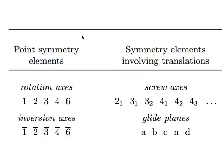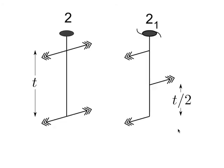The translational symmetry elements we are interested in are screw axes and glide planes. The screw axes are straightforward. This is a dyad — a rotation of 180 degrees reproduces the structure, and this is the repeat distance t along the dyad. In contrast to the normal dyad, a screw axis means I rotate by 180 degrees and then translate by a fraction of the repeat distance along the screw axis. The symbol 2 with subscript 1 means a rotation of 360/2 degrees and a translation of one half of the repeat distance.